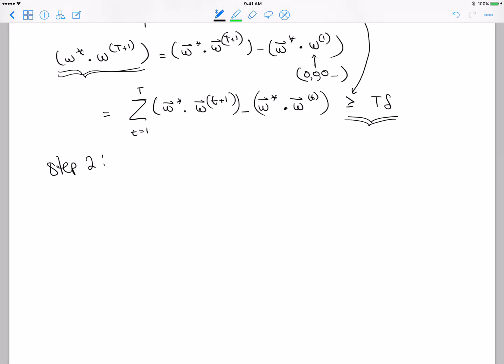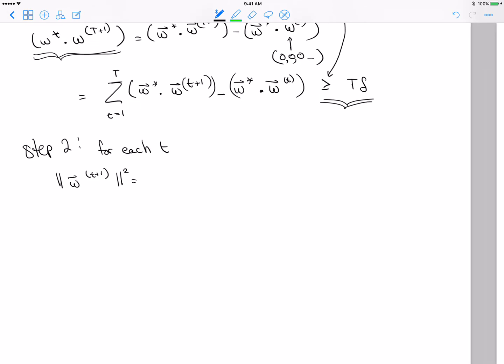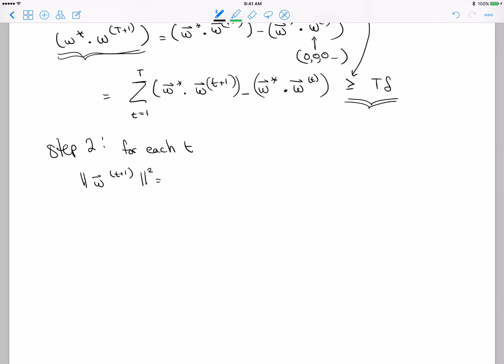So at each time, Wt+1, I want this not to grow too fast, right, so I can keep my cosine looking nice and big.